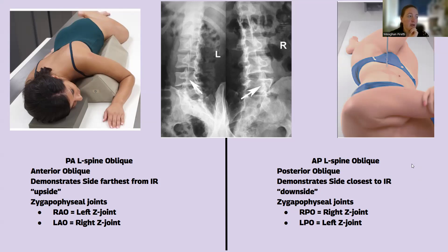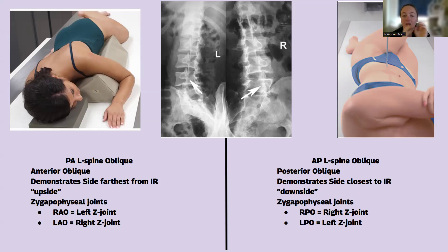Oblique lumbars work a little differently than oblique C-spines, and making sure you go through those concepts is important. I recommend only memorizing one. Choose one to memorize for your obliques — know what posterior lumbar spine obliques show, know what posterior C-spine obliques show, choose either supine or prone BEs. If you memorize one, just know that if you flip them over, it's going to be the opposite: if one shows side closest, the other will show side farthest.